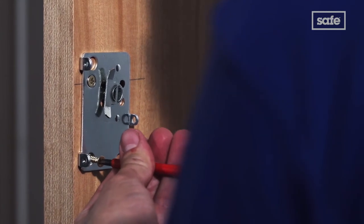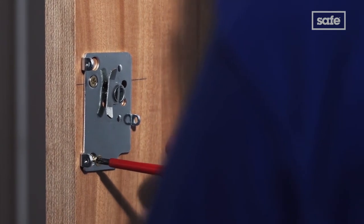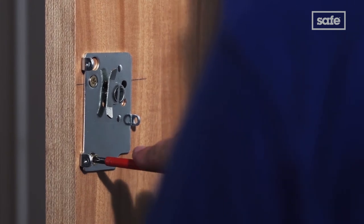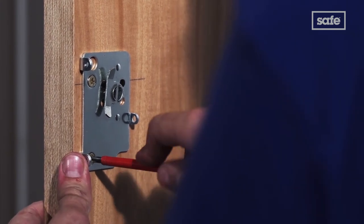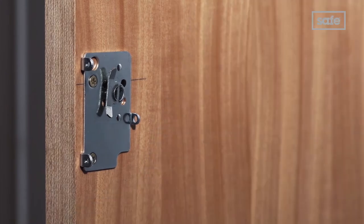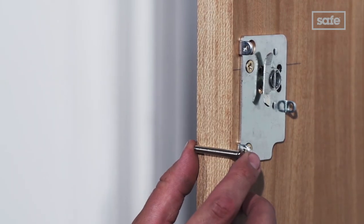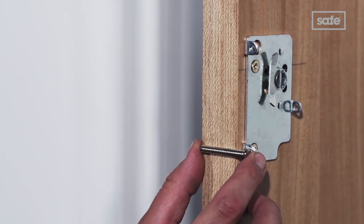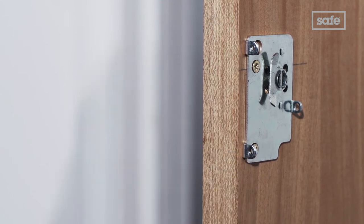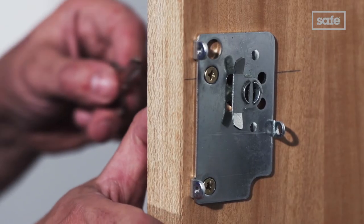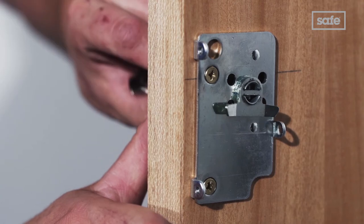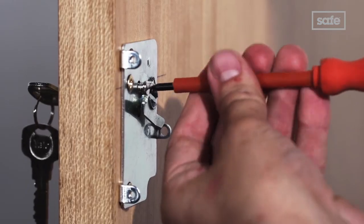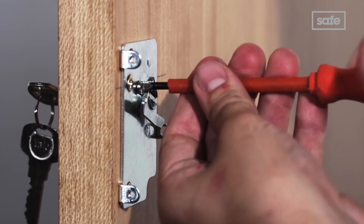Next, you'll need to secure the cylinder to the mounting plate using the connecting screws. Before you do, check the length of these screws against your door. For doors less than 54mm thick, you may need to shorten the screws using a hacksaw. Rotate the cam so the screw holes are clear. Then use the connecting screws to secure the cylinder.